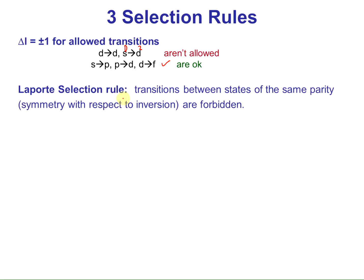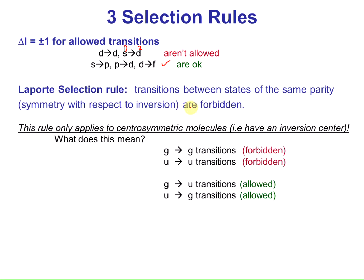The second rule is the Laporte selection rule. This has to do with transitions between states of the same parity — symmetry with respect to inversion — so those are forbidden. This rule only applies to centrosymmetric molecules, meaning those that have an inversion center, like an octahedral complex. So G-to-G transitions are forbidden, U-to-U are also forbidden, but G-to-U or U-to-G — gerade to ungerade or ungerade to gerade — those are allowed.